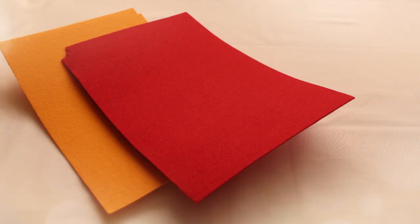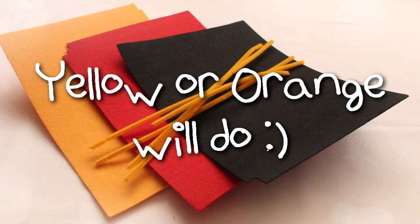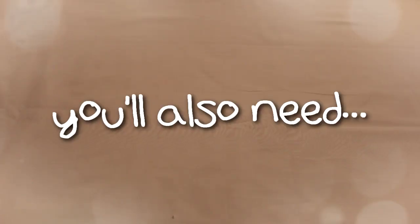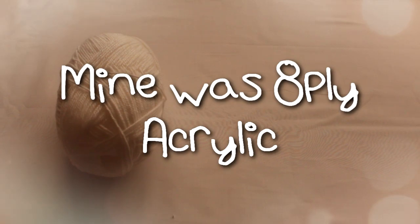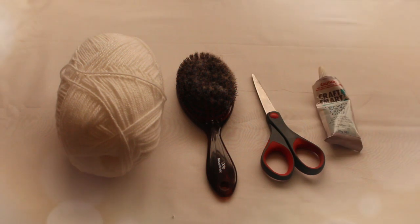You're going to need yellow, red, and black hard felt sheets, orange pipe cleaners, white yarn, a brush, scissors, and craft glue.